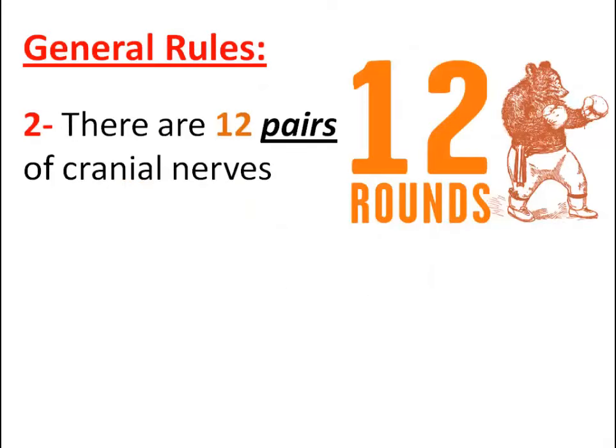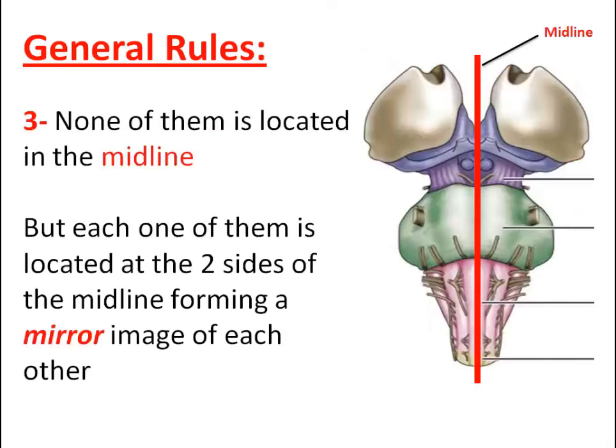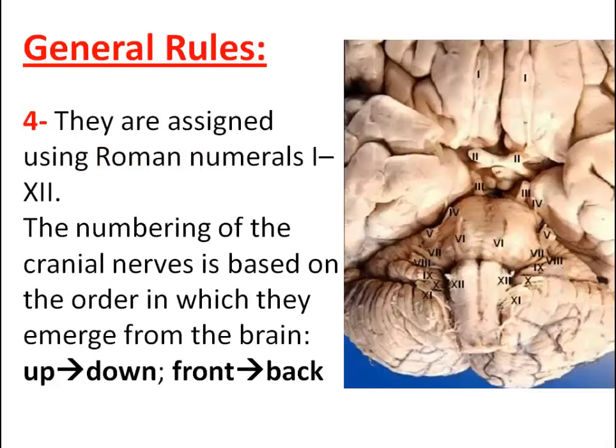There are twelve pairs of cranial nerves. None of them is located in the midline, but each one of them is located at the two sides of the midline, forming a mirror image of each other.